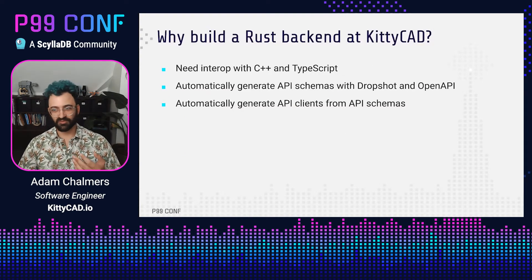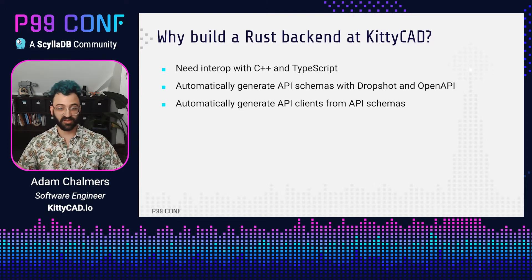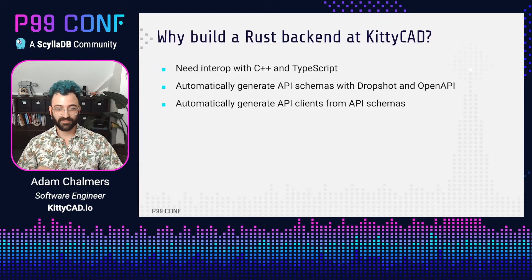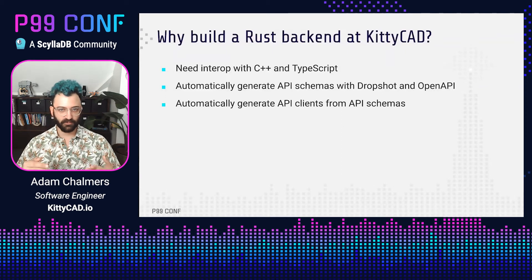I now work at KittyCAD and we use Rust for very different reasons. The big one is interop with other languages. We're building a computer-aided design suite, and we have a graphics engine that renders your 3D designs in the cloud. It's written in C++ because C++ has the most mature Vulkan graphics libraries — C++ is definitely the right tool for that job. But we did not want to write the API that controls that graphics engine in C++, because remember CloudBleed and massive memory leaks and buffer overflows. So we decided the graphics engine would be controlled by an API written in Rust, and this worked out pretty well because it's much more ergonomic to write an API server in Rust.